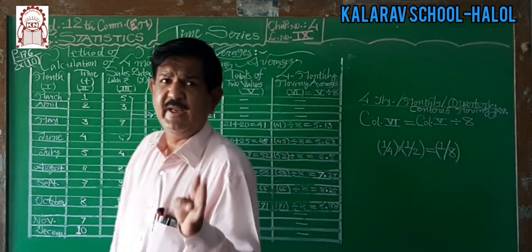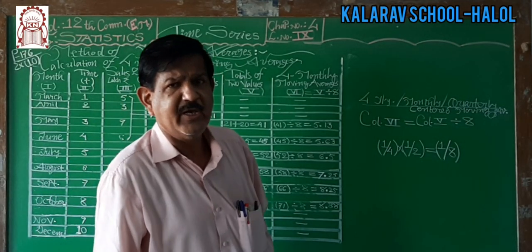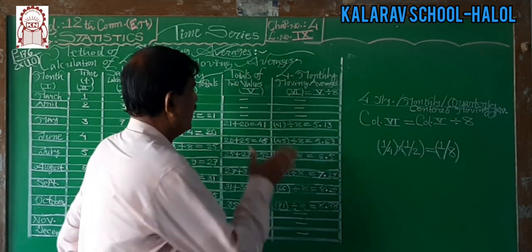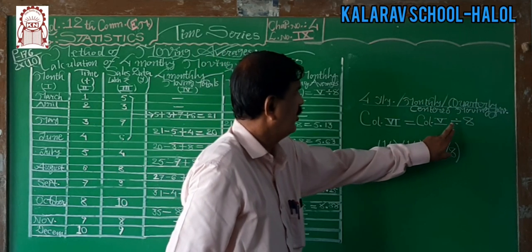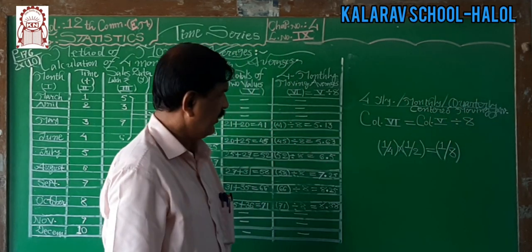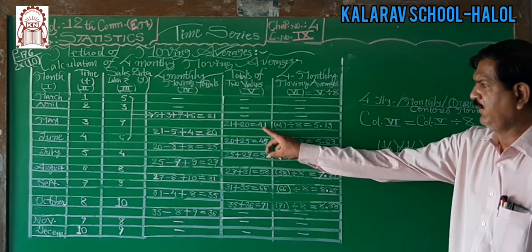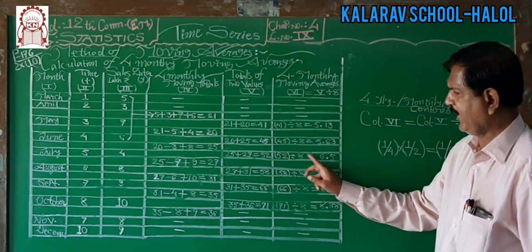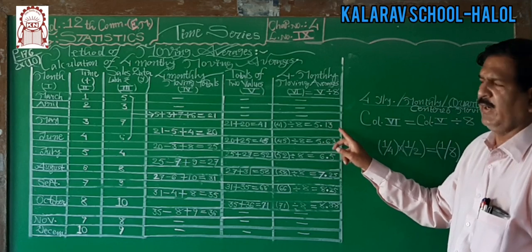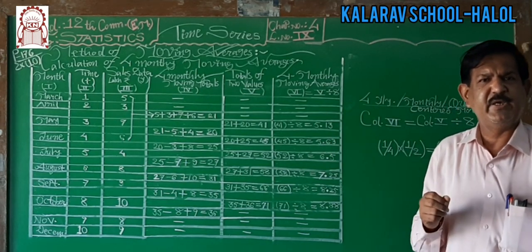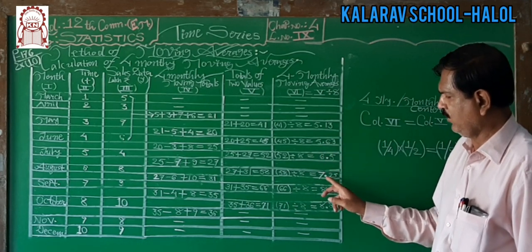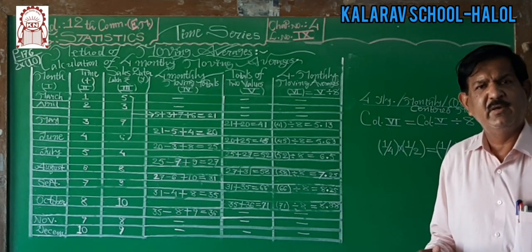Now divide column 5 by 8 — that is, first divide by 4 and then divide by 2, since 1/4 times 1/2 equals 1/8. This gives column number 6: the 4-monthly centered moving average values. Dividing 41, 45, 52, 58, 66, 71 each by 8 gives: 5.13, 5.63, 6.5, 7.25, 8.21, and 8.88 respectively, rounded to 2 decimal places.